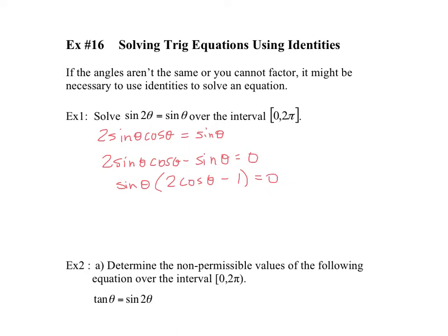This gives us two equations: sine theta equals 0, and 2 cos theta minus 1 equals 0. We have sine theta equals 0 as one equation, and we have 2 cos theta minus 1 equals 0. I can solve this quickly and get cos theta equals 1 half.